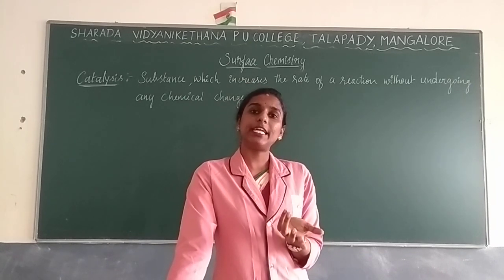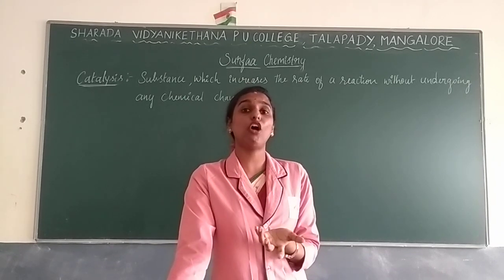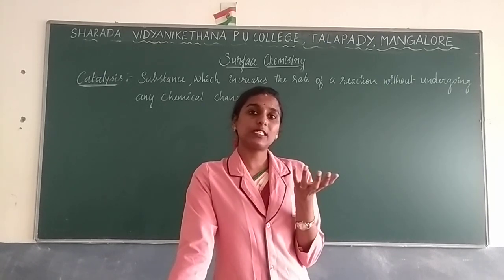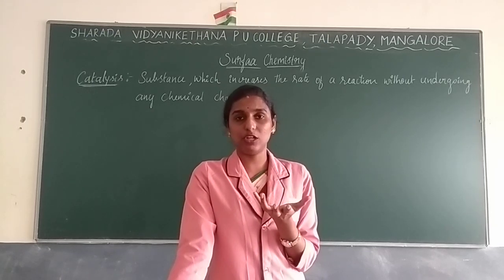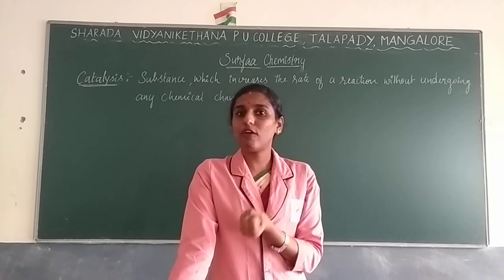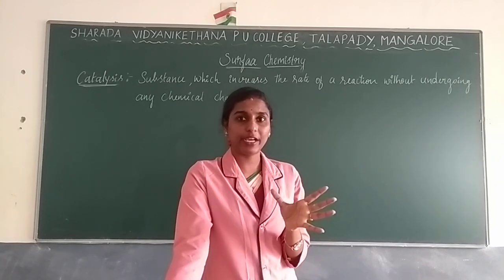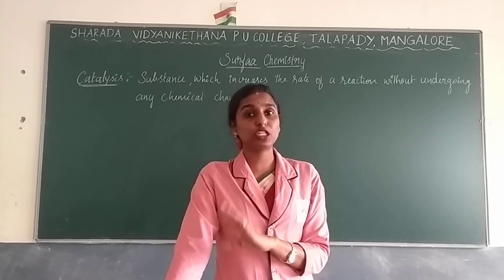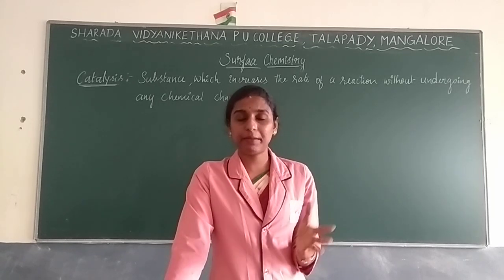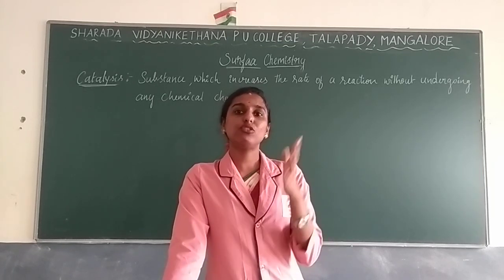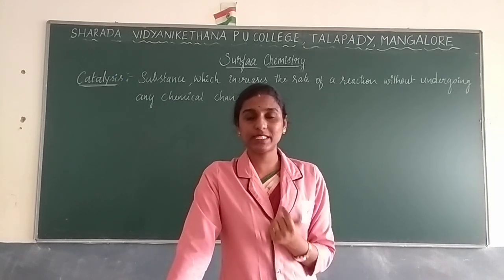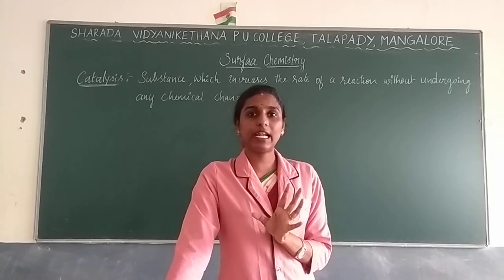Next we learned about Freundlich adsorption isotherm in terms of solution. You take acetic acid as the solution and charcoal as the adsorbent. The same concept applies and you get a similar graph, but here you measure in terms of concentration. The formula becomes x/m = k·c^(1/n), where c is the molar concentration.